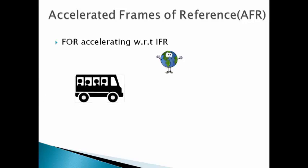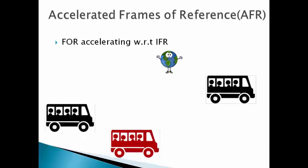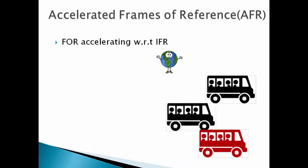Next one, accelerated frames of reference. Frame of reference, accelerating with respect to inertial frame of reference is called as accelerated frame of reference. For example, a bus accelerating or decelerating with respect to Earth will be termed as AFR. Also, a bus accelerating with respect to another bus which is moving with constant velocity is also termed as AFR.